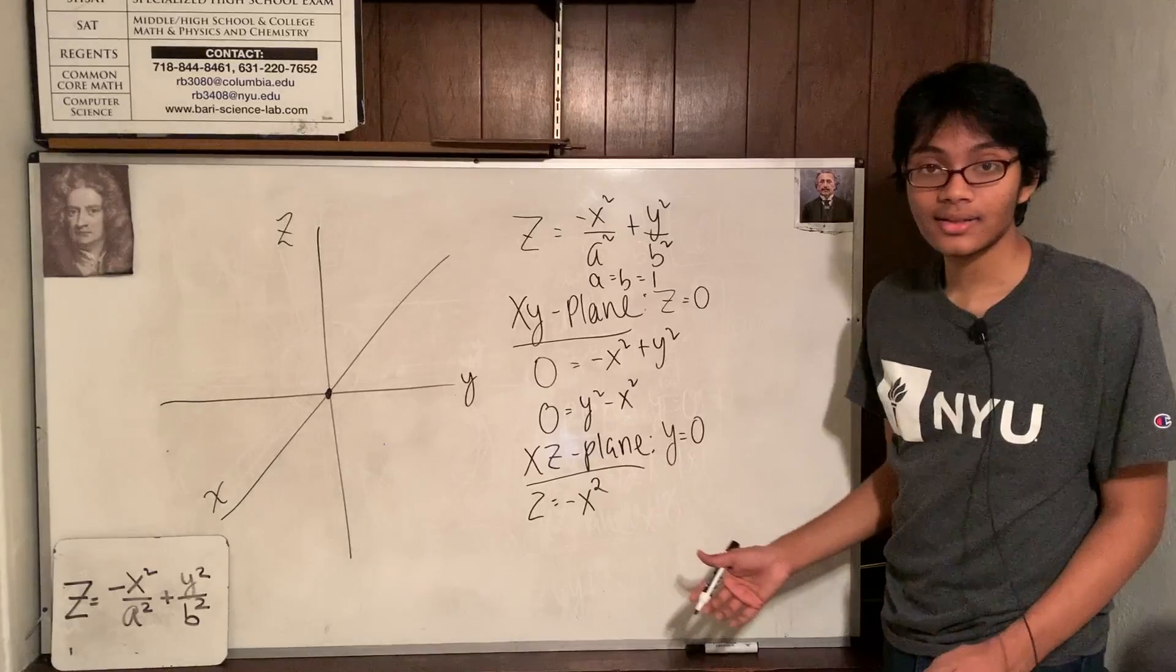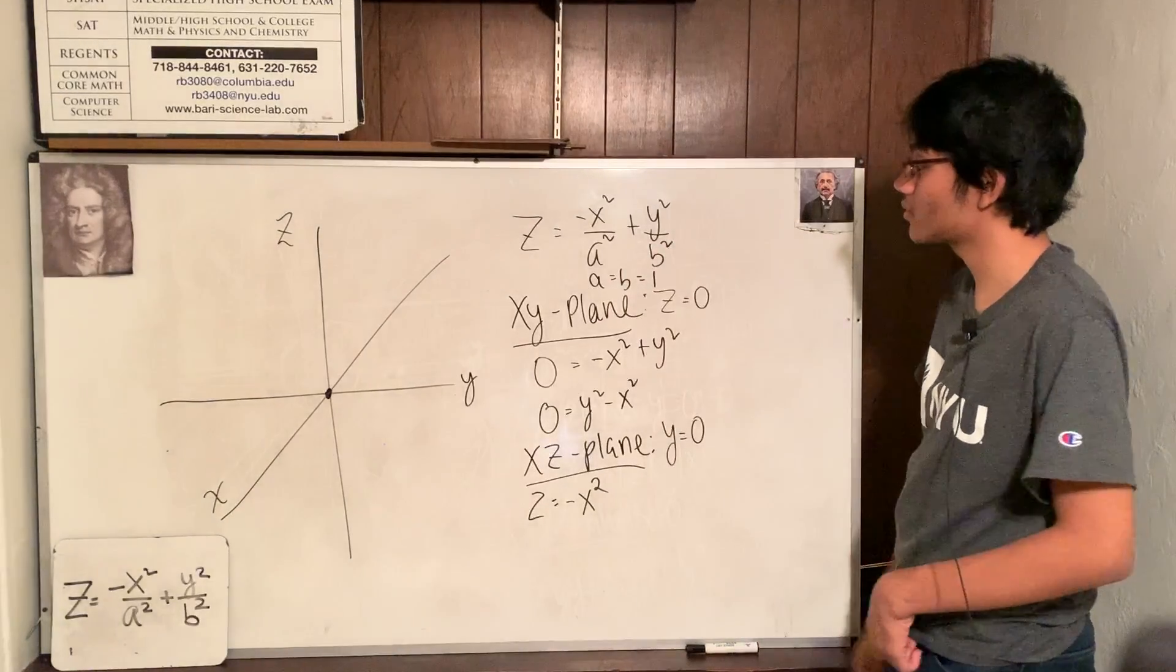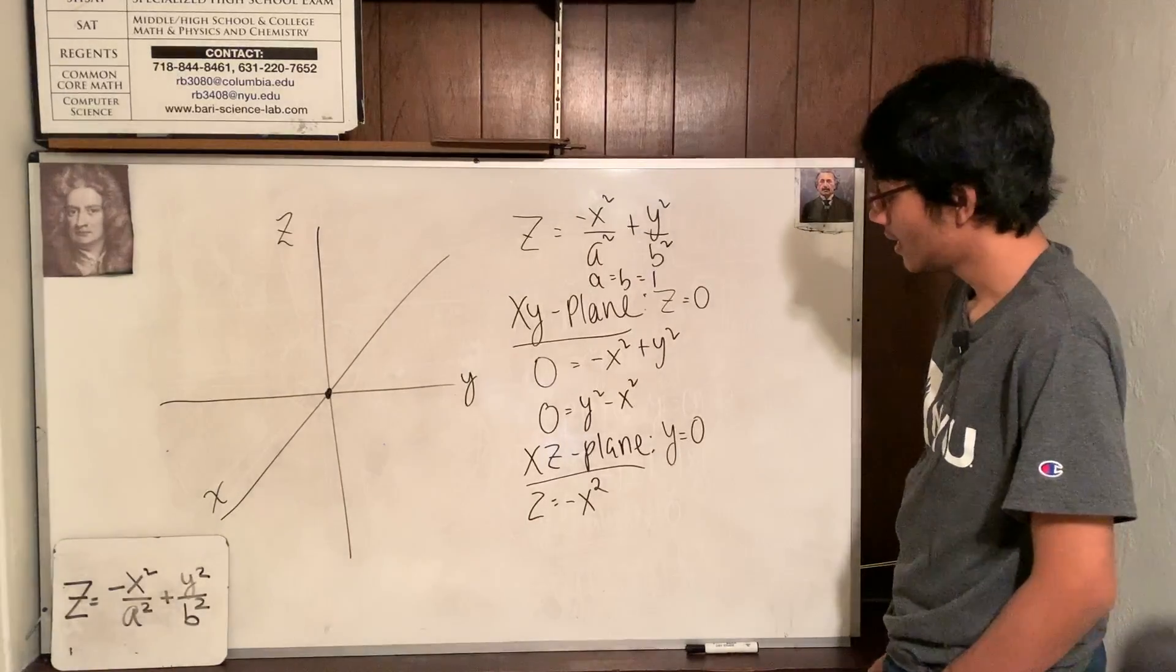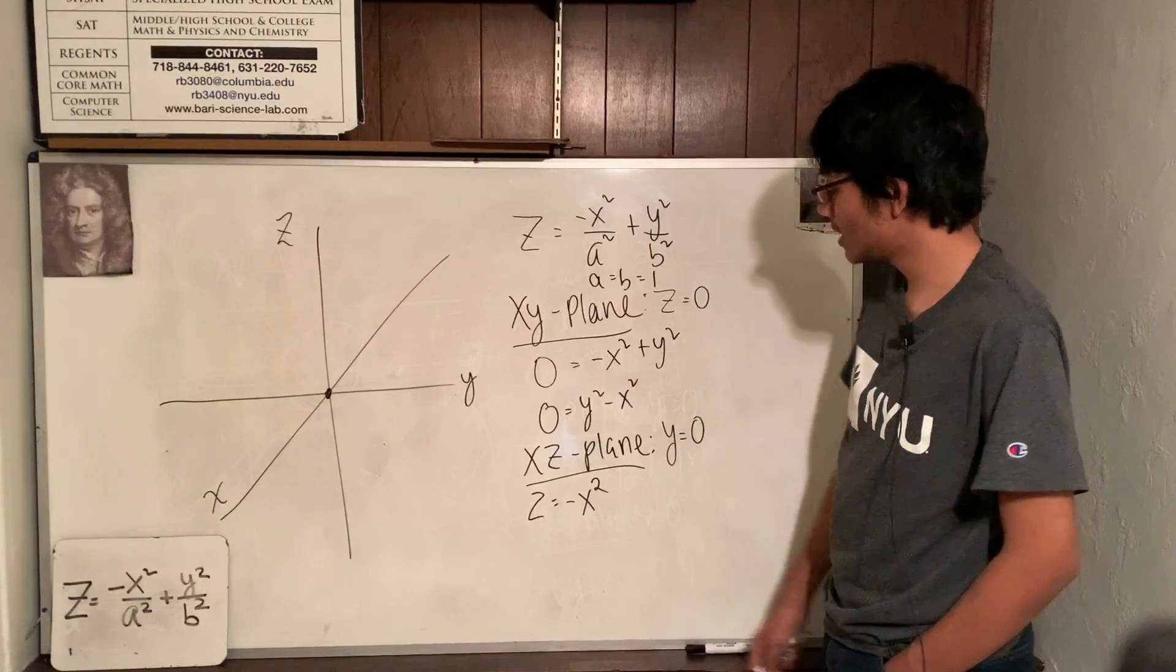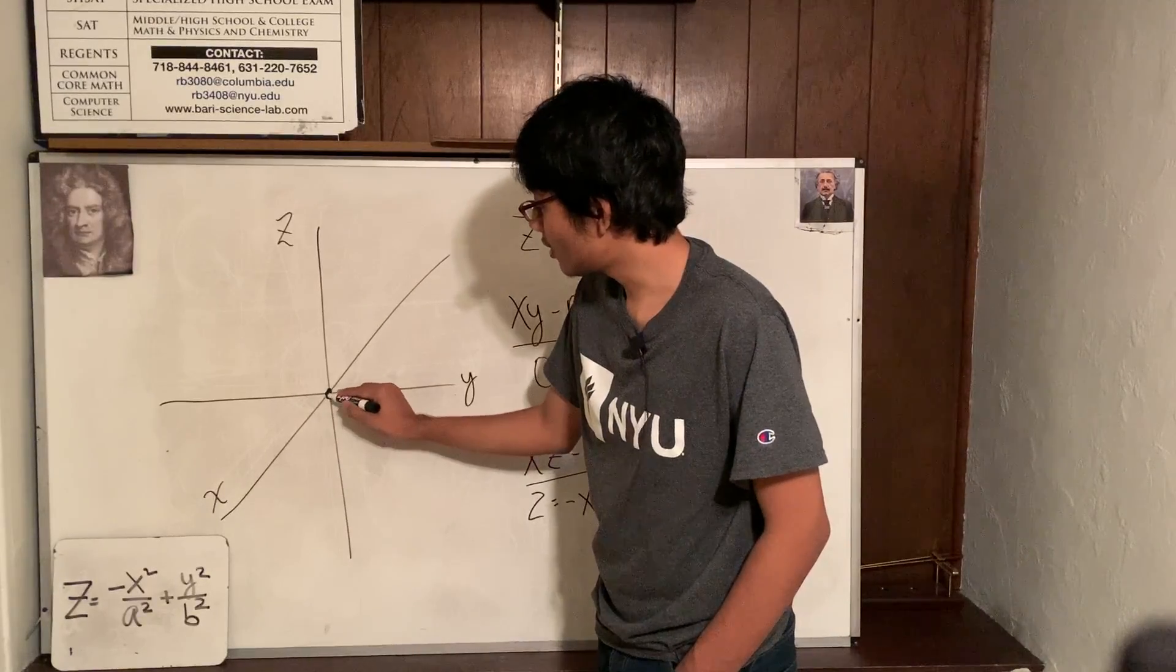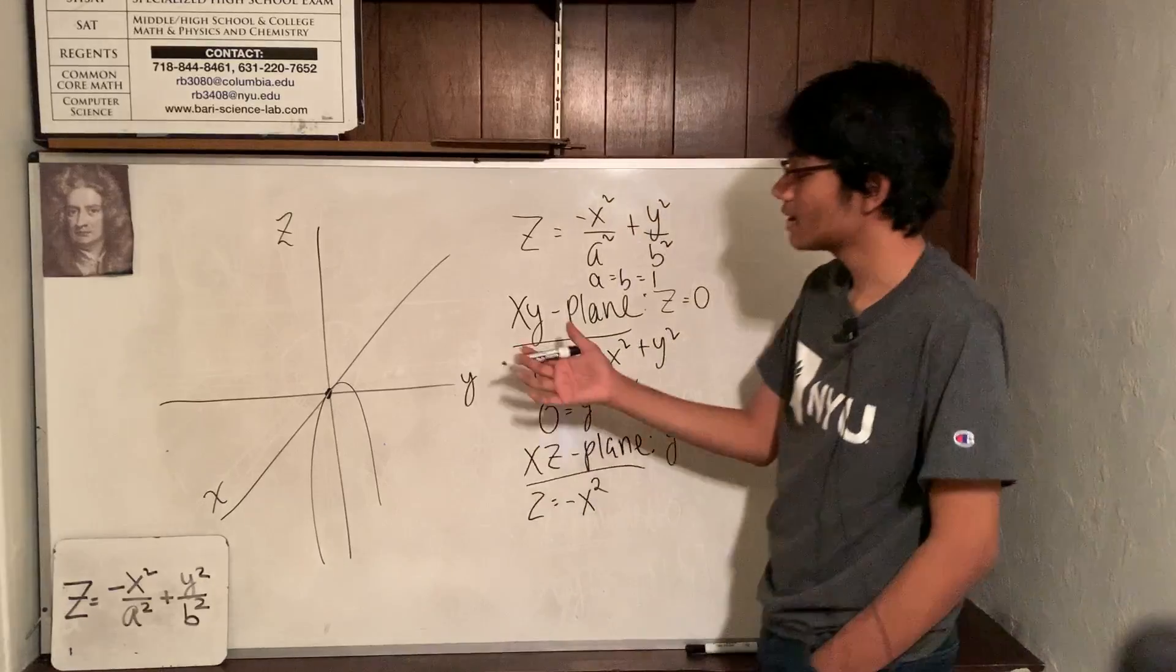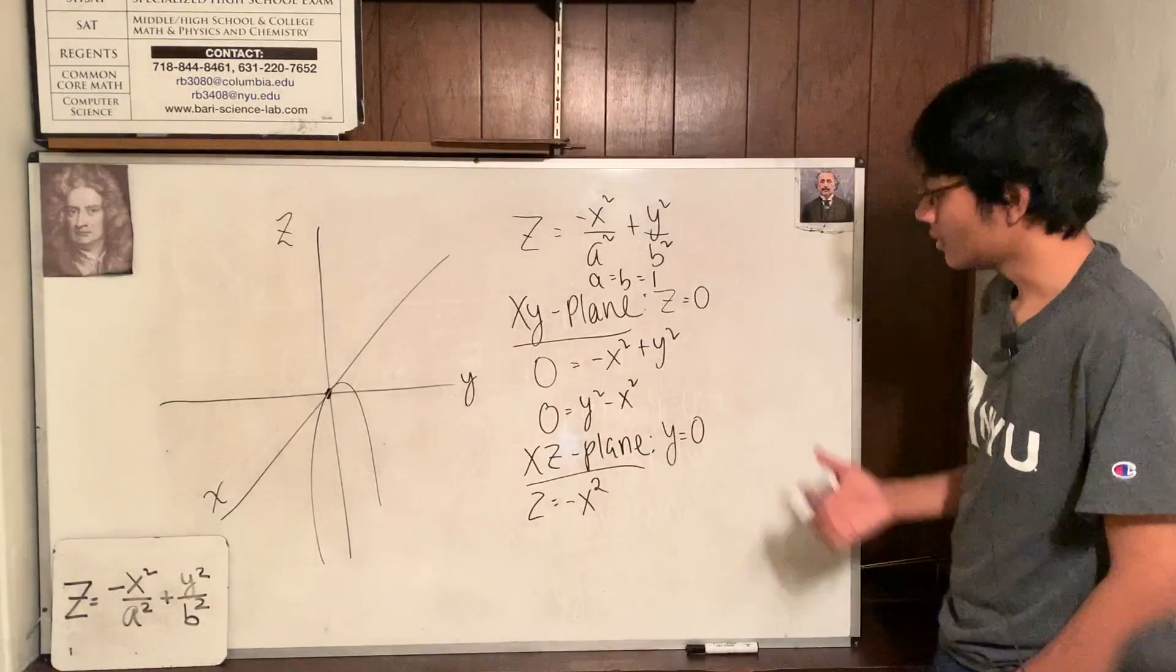Well, what is that? That's just a parabola. Z equals minus x squared is just a parabola, right? But what type of parabola is it? Well, it's an upside down parabola. And where is it? It's on the xz plane. So come over to the xz plane and draw an upside down parabola. I think this is the first 3D thing I'm actually drawing nicely. So that's good.